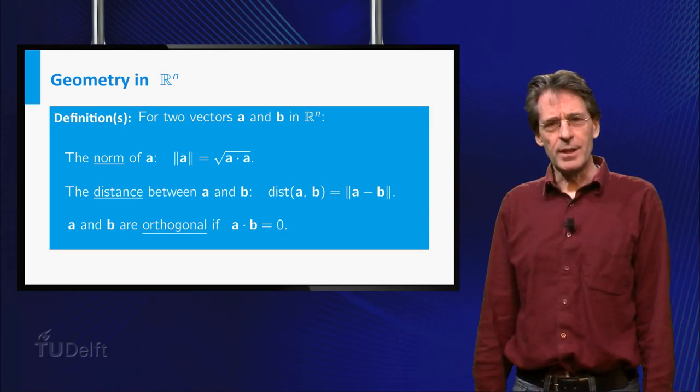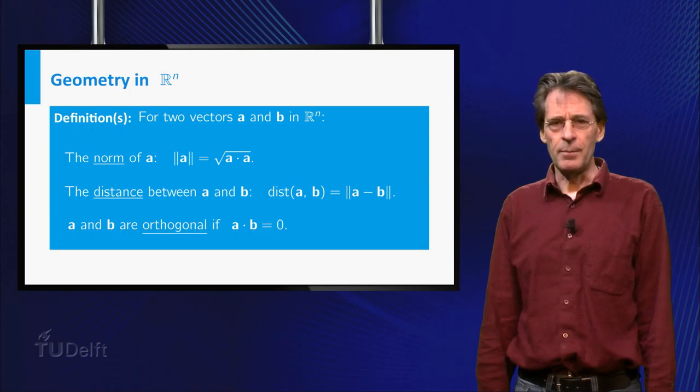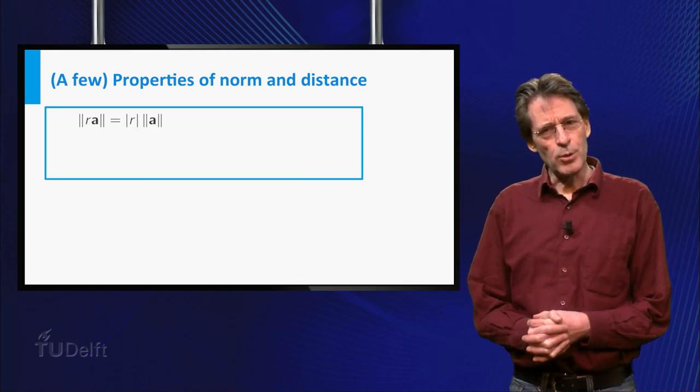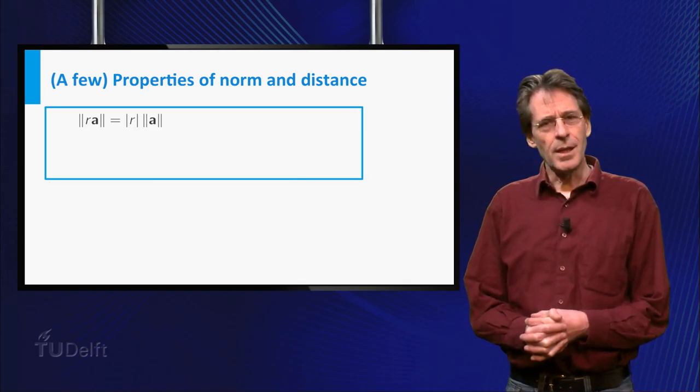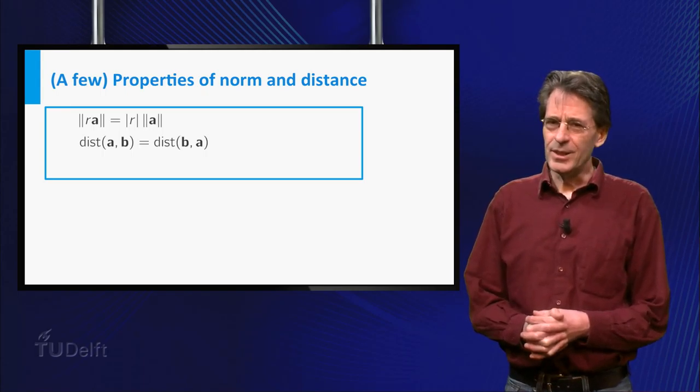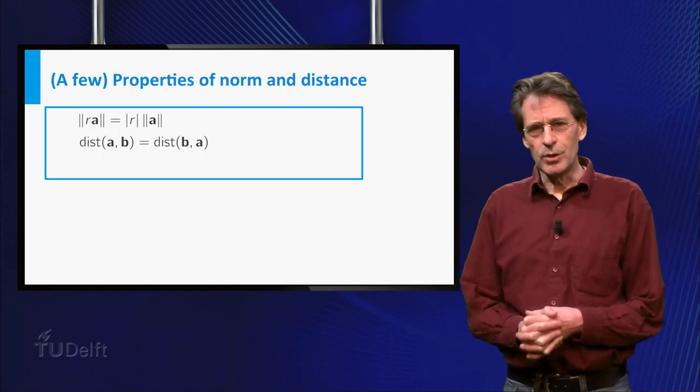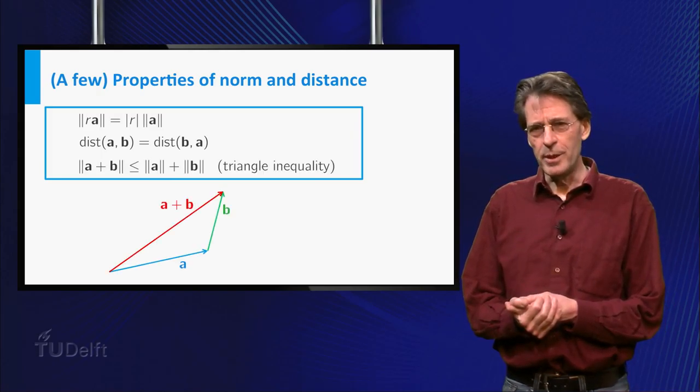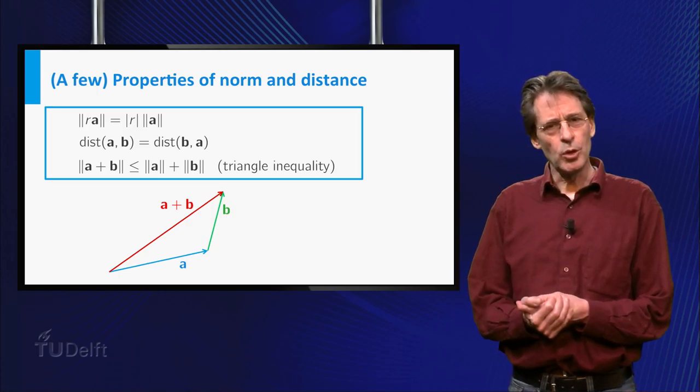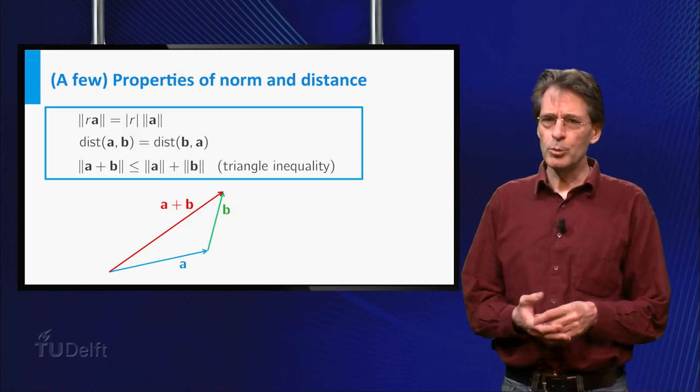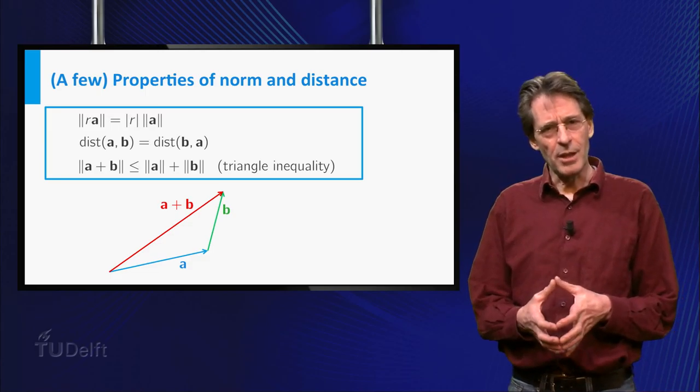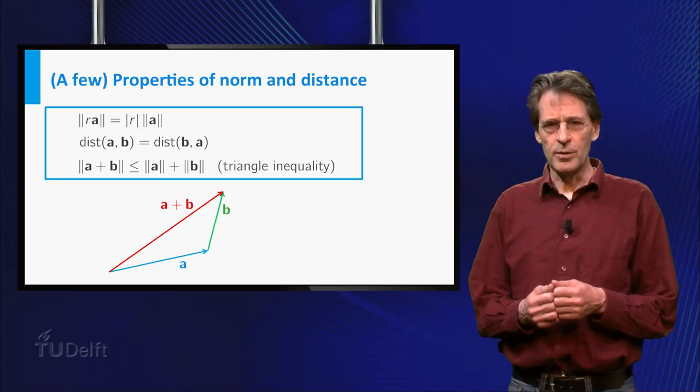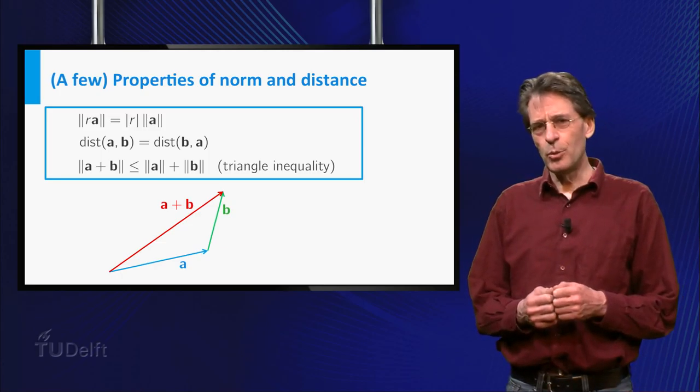Many of the properties of length and distance simply carry over to Rn. To mention a few, the norm of r times a equals the absolute value of the number r times the norm of a. The distance between a and b equals the distance between b and a. Well, that's fine, isn't it? And the norm of a plus b is at most equal to the sum of the norms of a and b. The first properties follow immediately from the definitions and rules of the inner product. The last inequality is known as the triangle inequality and it is a bit tricky to prove it from the definitions.